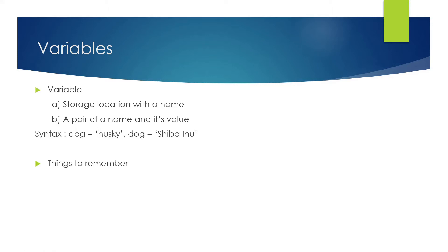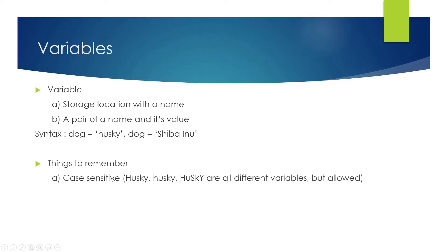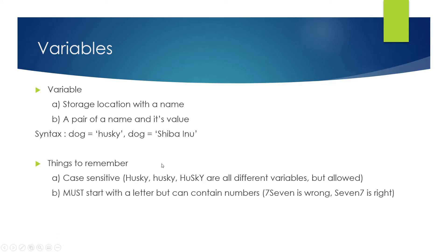You have to keep a few things in mind before defining or declaring a variable. First of all, it is case sensitive. Case sensitive means 'husky' with lowercase h, 'Husky' with uppercase H, and 'HSY' with three uppercase letters are three different variables. All of them are allowed, but the casing is different, which means all three are different variables.